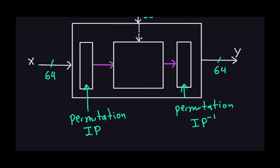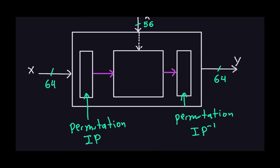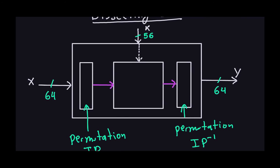Notice that the key has no role in these two permutations. It doesn't matter what the key is — the IP and IP-inverse each do what they do independently of the key. The key only comes into play inside the inner encryption box, which we'll explain later.